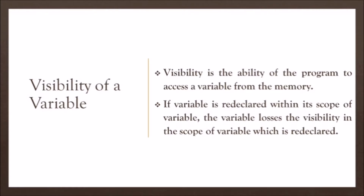Now, visibility of a variable — visibility is the ability of the program to access a variable from memory. If a variable is redeclared within its scope, the variable loses its visibility in the scope where it is redeclared. When you redeclare that variable, the previous value is removed and you cannot access it.